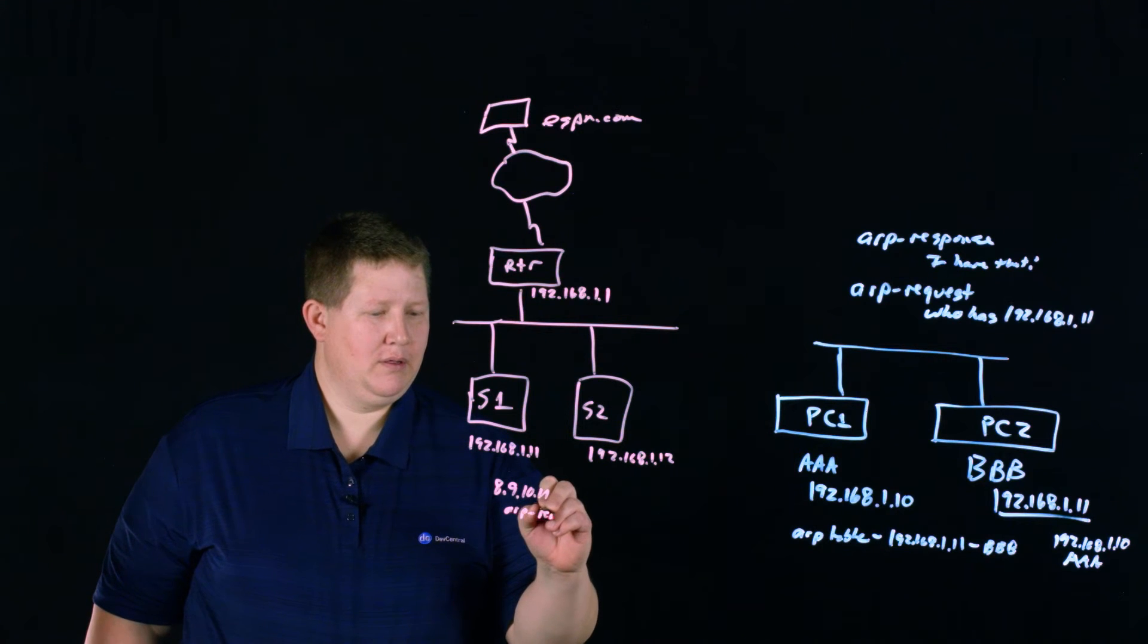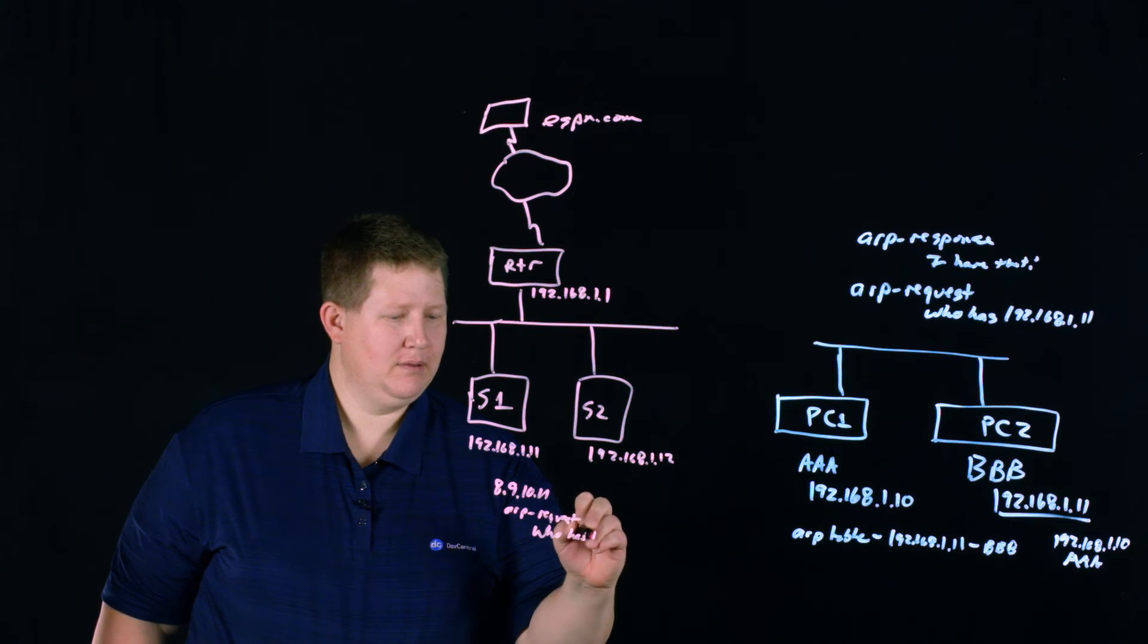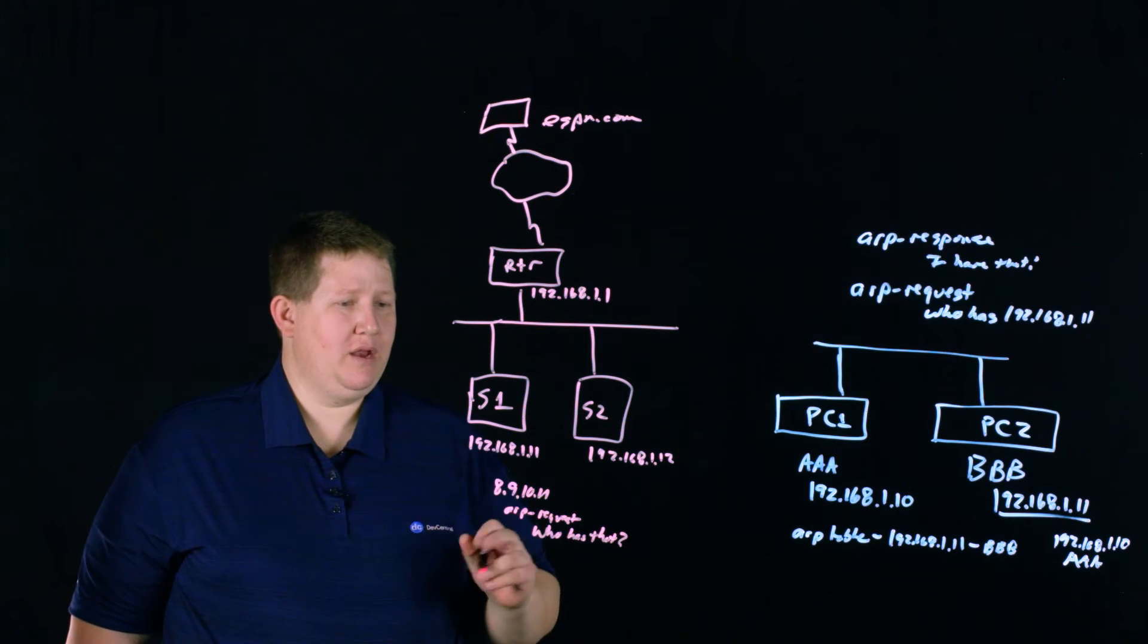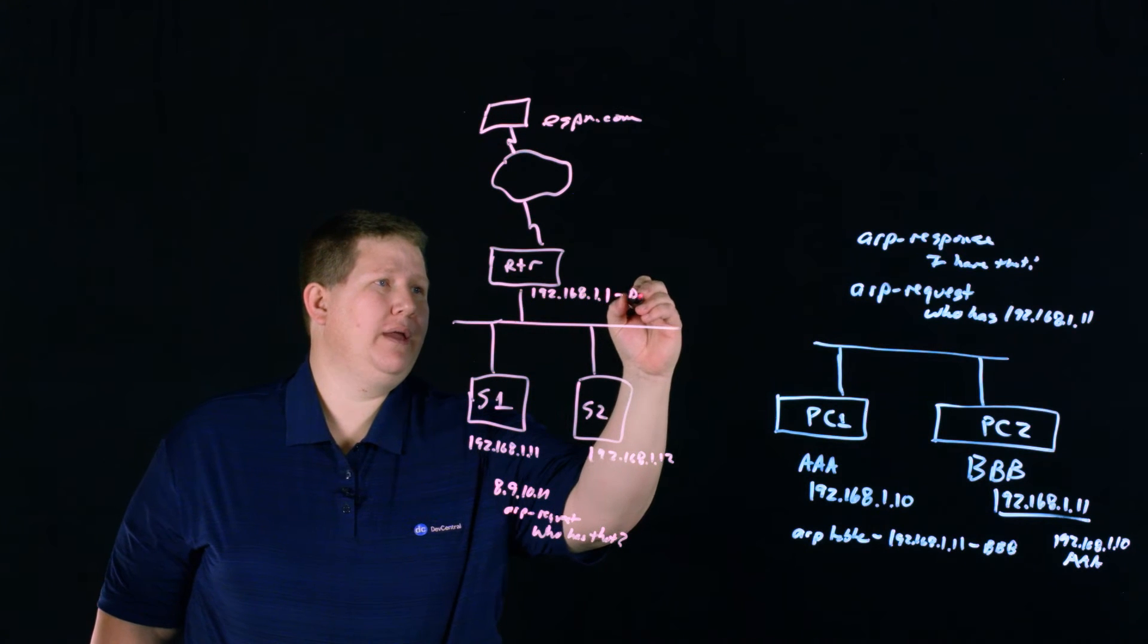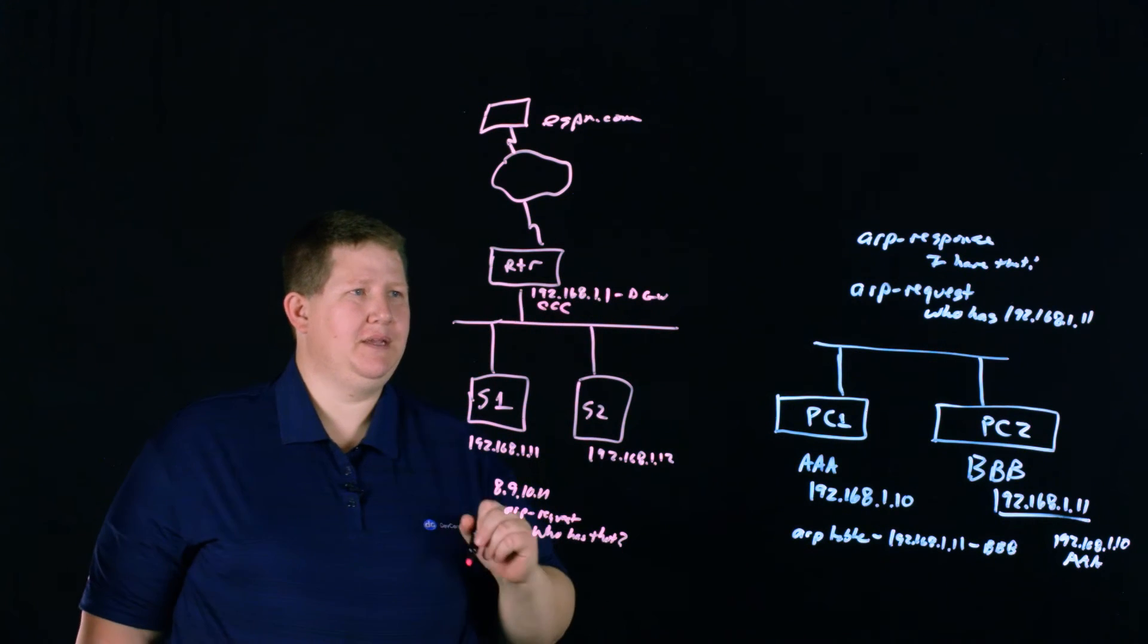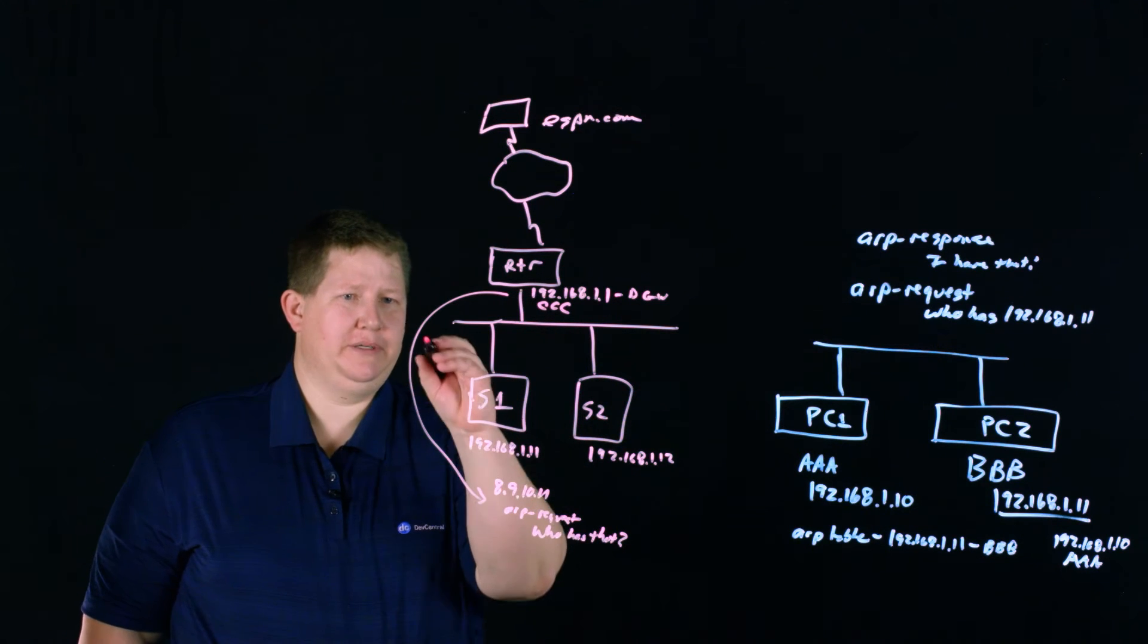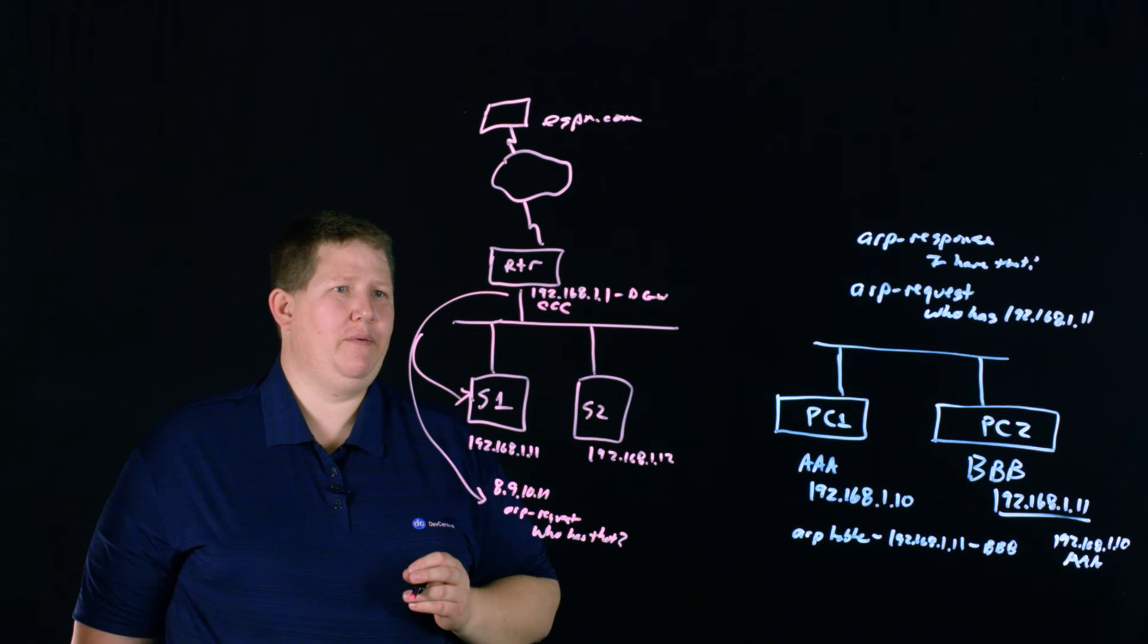So he says in his ARP request, who has that? Who has that IP? And, of course, nobody on the local network has that. But this being the default gateway, he'll say, hey, I have that. And so he'll respond with, let's say, CCC. And so he'll respond down, actually, down to server one. And then server one will send that traffic out that way.